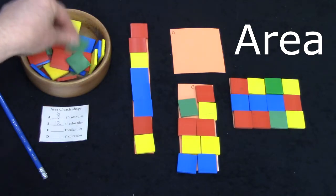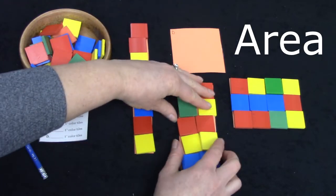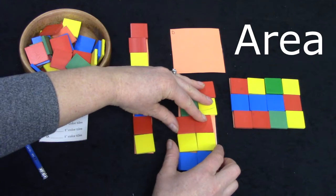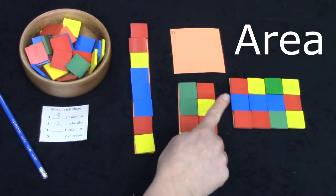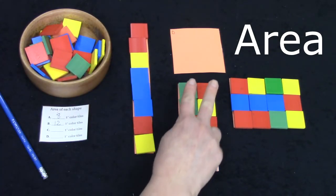Could I say that I have covered the whole shape like this? No. I still need another shape. Another tile. Let's figure out the area of this shape by counting the squares.